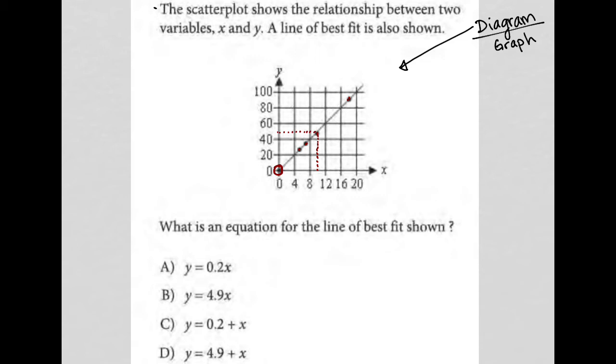So, the information here says the scatter plot shows the relationship between two variables, x and y, a line of best fit is also shown. So, that's interesting because the points actually go through the line, and that's not always the case for a line of best fit. Sometimes points are above or below or a combination of the two. But all four of our points in this line are actually on the line of best fit.